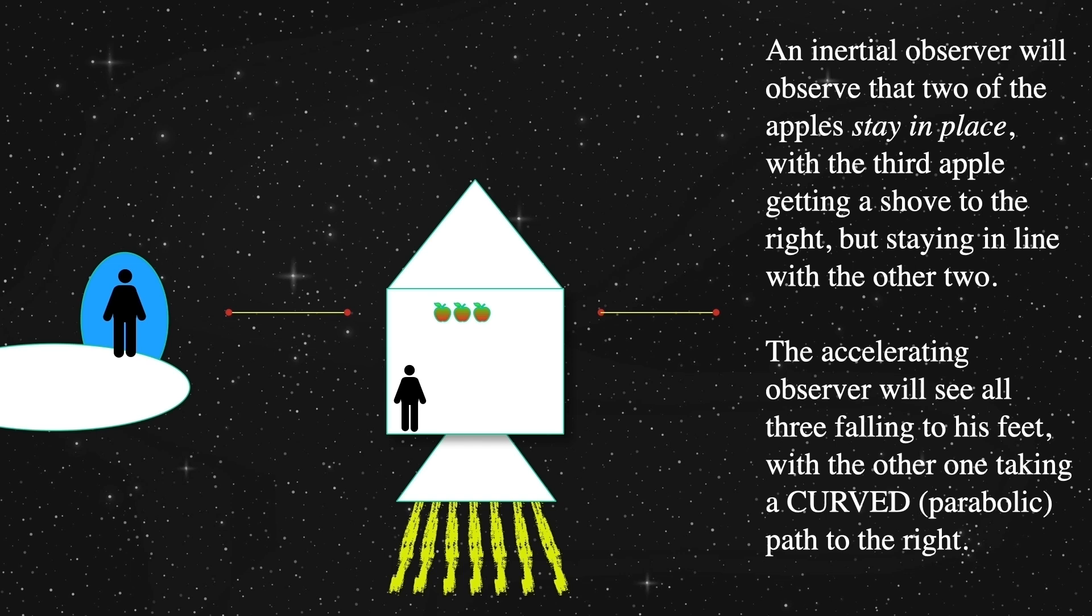Note that this is in deep space and the rocket and space station do not have enough mass to be significant gravitational bodies. Let's now say that the two leftmost apples stay put. But let's say that the rightmost apple is given a tiny shove when the batons let go.